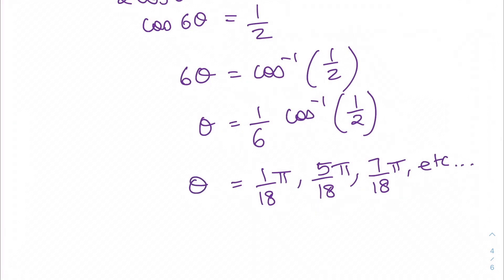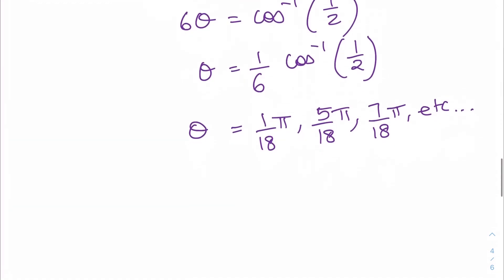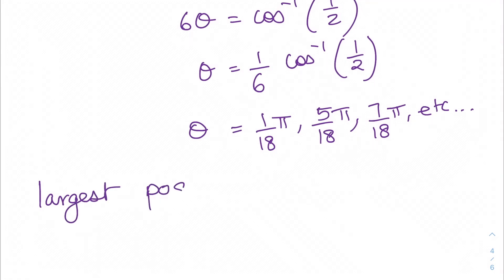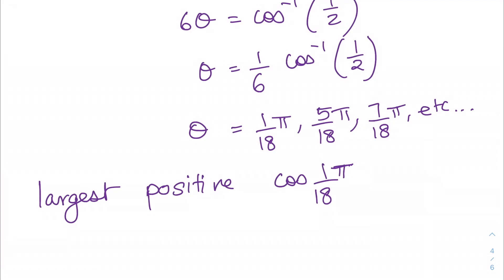Now to get the largest x value we need the smallest theta. So the largest positive root is going to be cos(π/18). This will be my largest positive root of the equation in trigonometrical form.